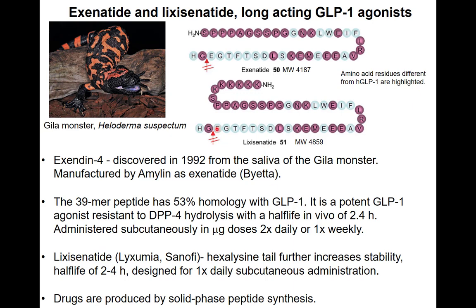Lixisenatide has a similar but even more improved half-life compared to the Gila monster peptide. Both the Gila monster peptide and the Sanofi drug are produced industrially by solid phase peptide synthesis, where amino acids are added one at a time to build up the peptide. This is a complex process, which means these are expensive drugs to manufacture.